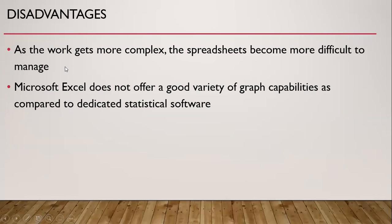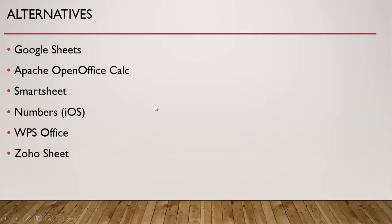There are certain disadvantages of Microsoft Excel. As the work gets more complex, the spreadsheet becomes more difficult to manage. Microsoft Excel does not offer a good variety of graphic capabilities as compared to dedicated statistical softwares. The alternatives for Microsoft Excel include Google Sheets, Apache OpenOffice Calc, Smartsheet, Numbers (for iOS), WPS Office, and Zoho Sheet, and there are many more we can find on a Google search.